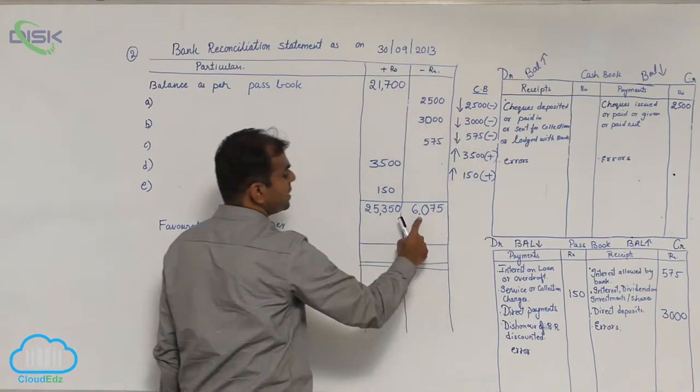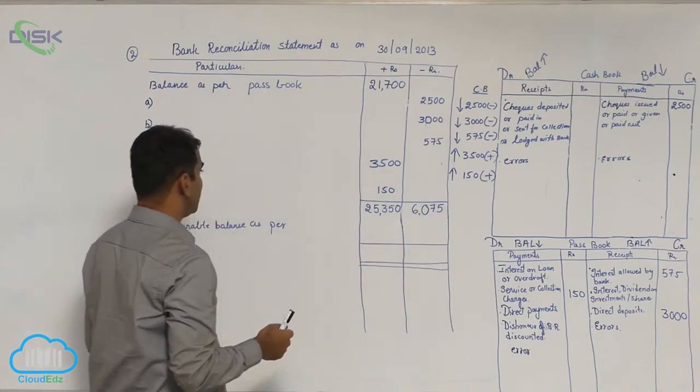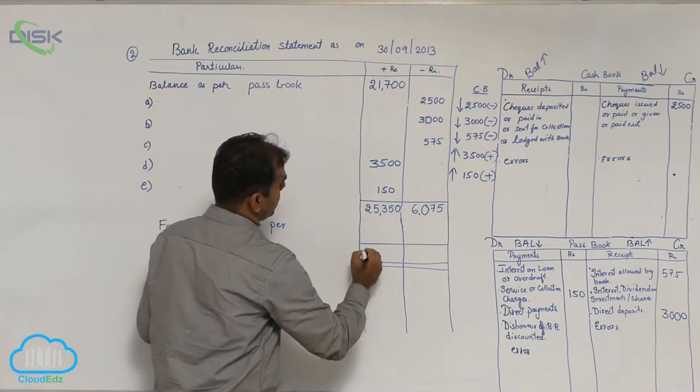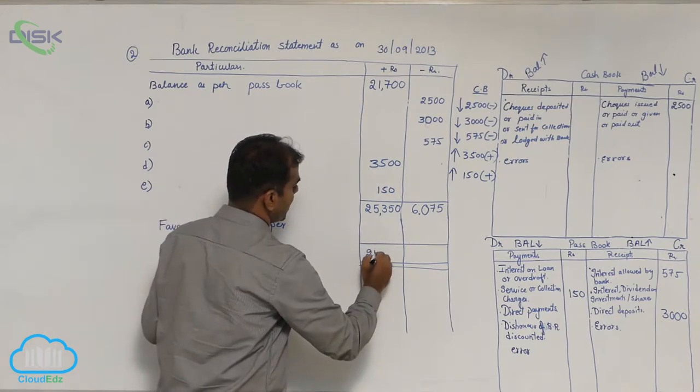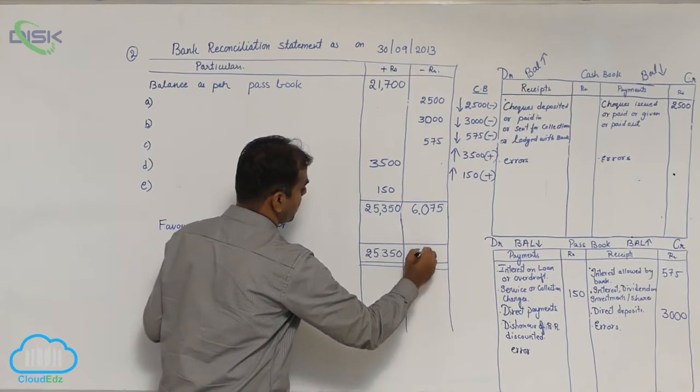Similarly, this total will change to 6075. As a result, our total of plus column is more. So let us write this on both the sides. So 25,350.